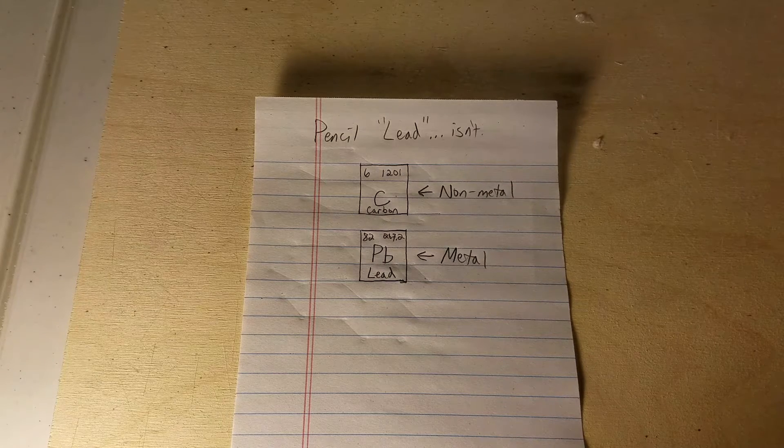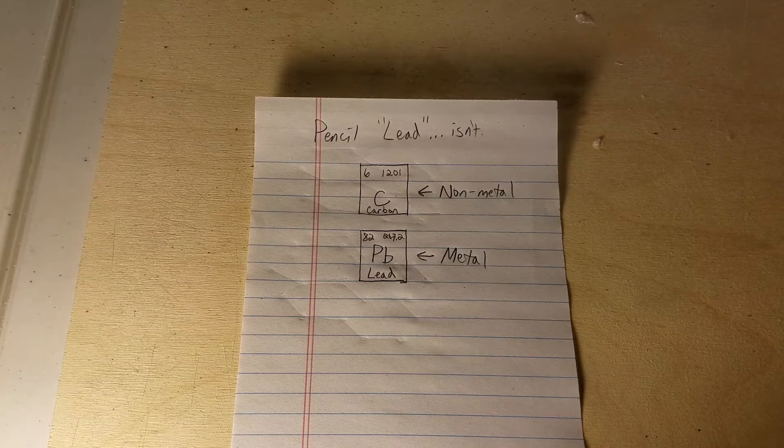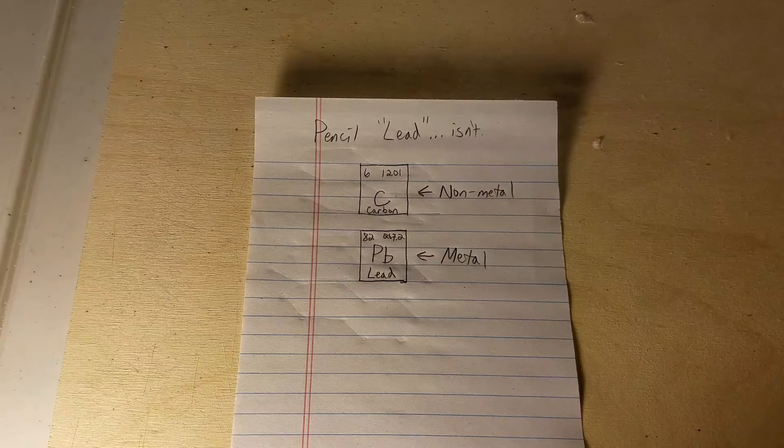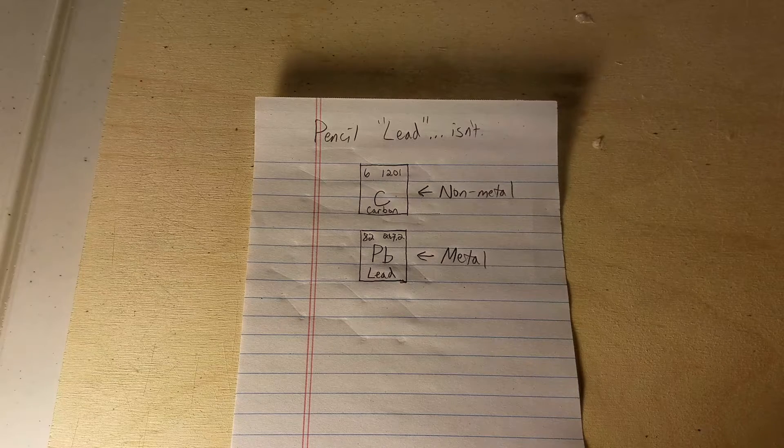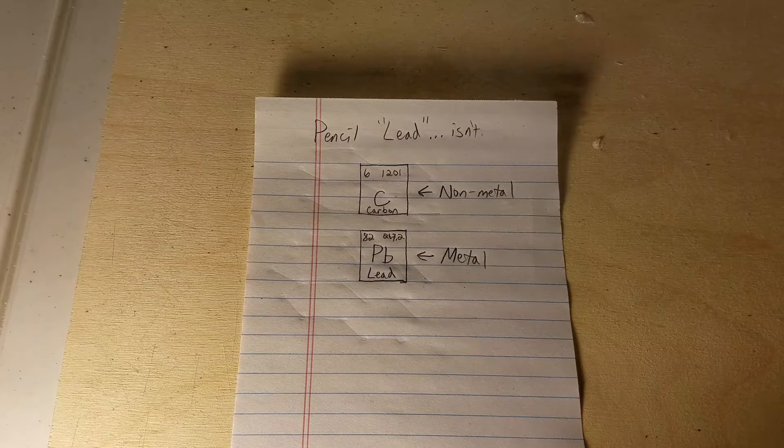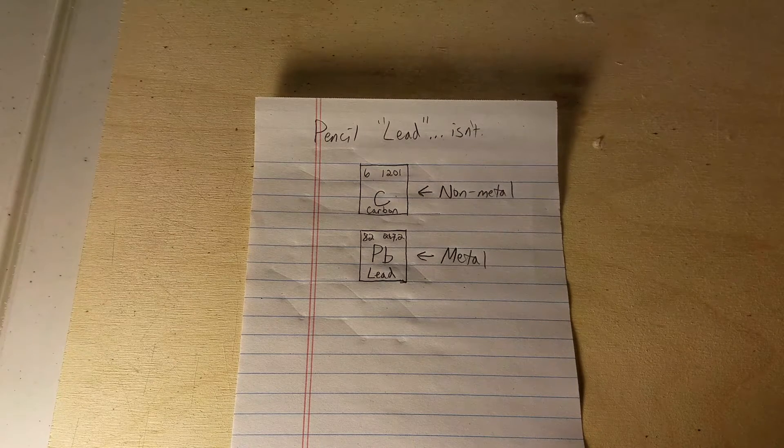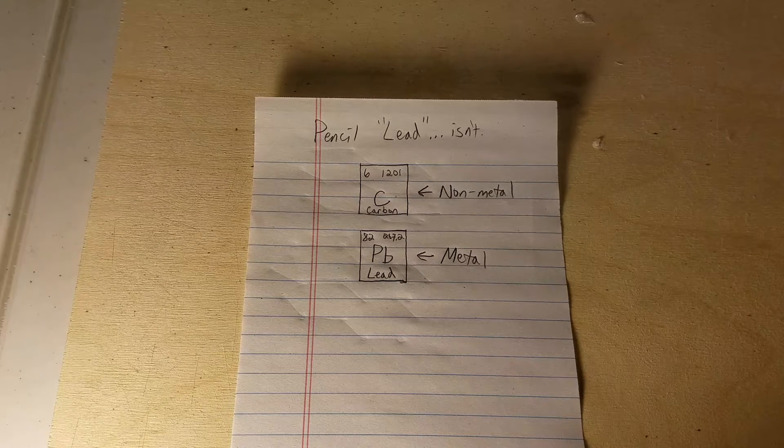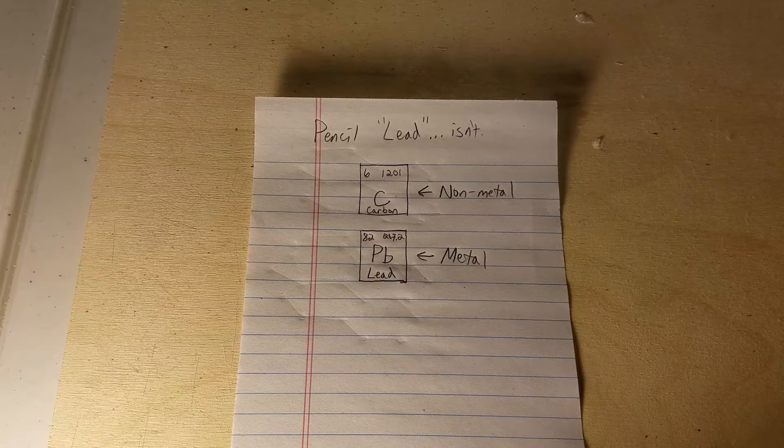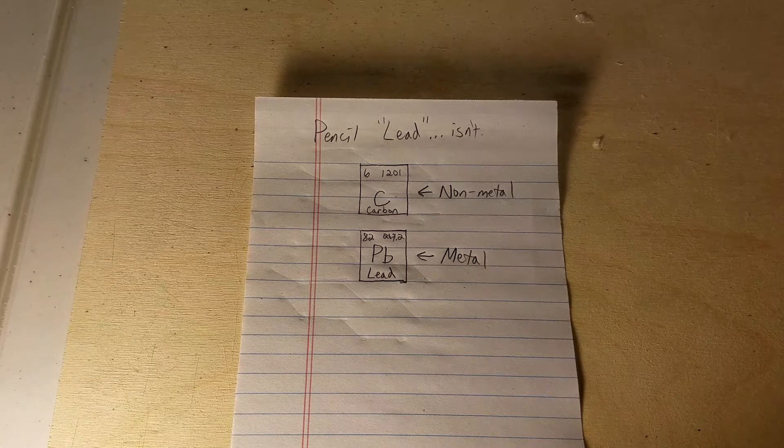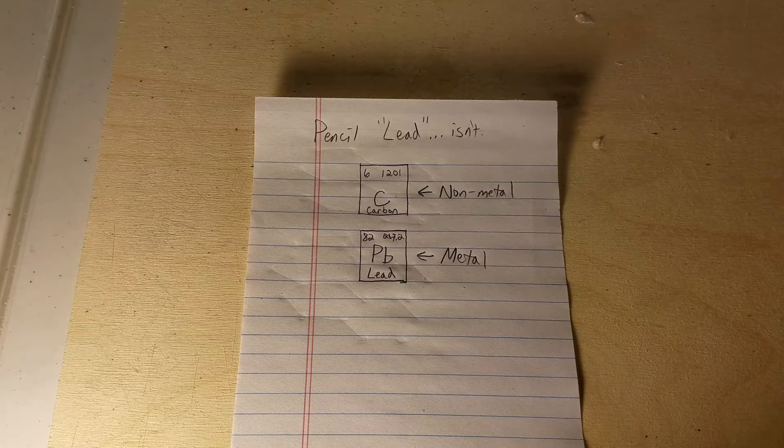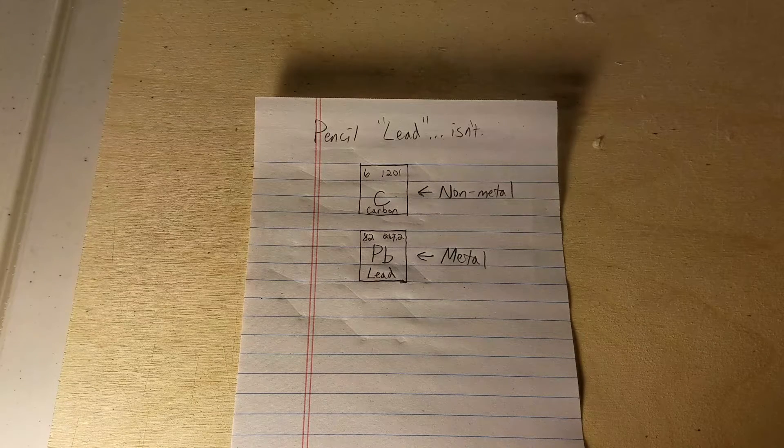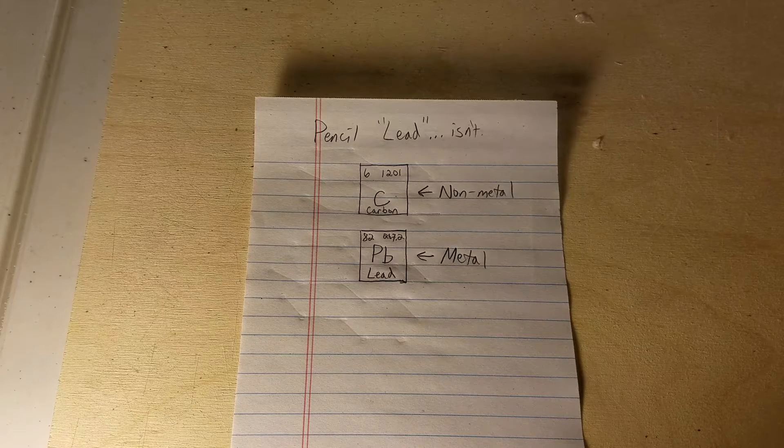Most pencil leads in modern times are composed of a combination of two materials: graphite, this crystalline structure of the element carbon, and clay, which is a variety of different pieces of rocks that have been ground down, weathered into very fine particles, mostly made of various oxides, aluminum oxide, silica oxide. So when we're talking about pencil lead, it's not actually lead.